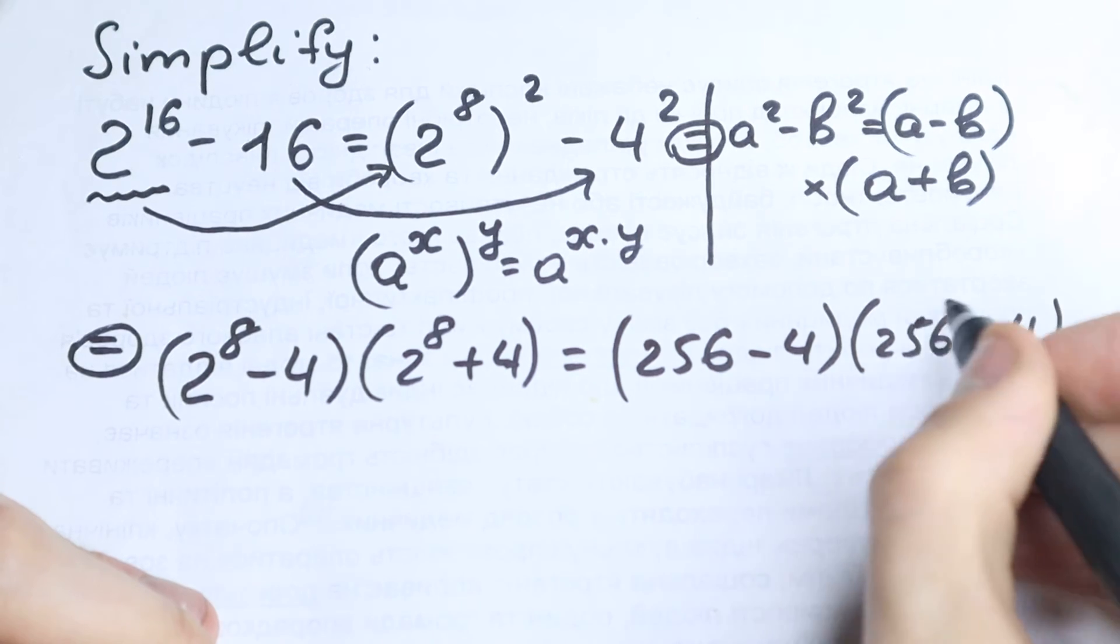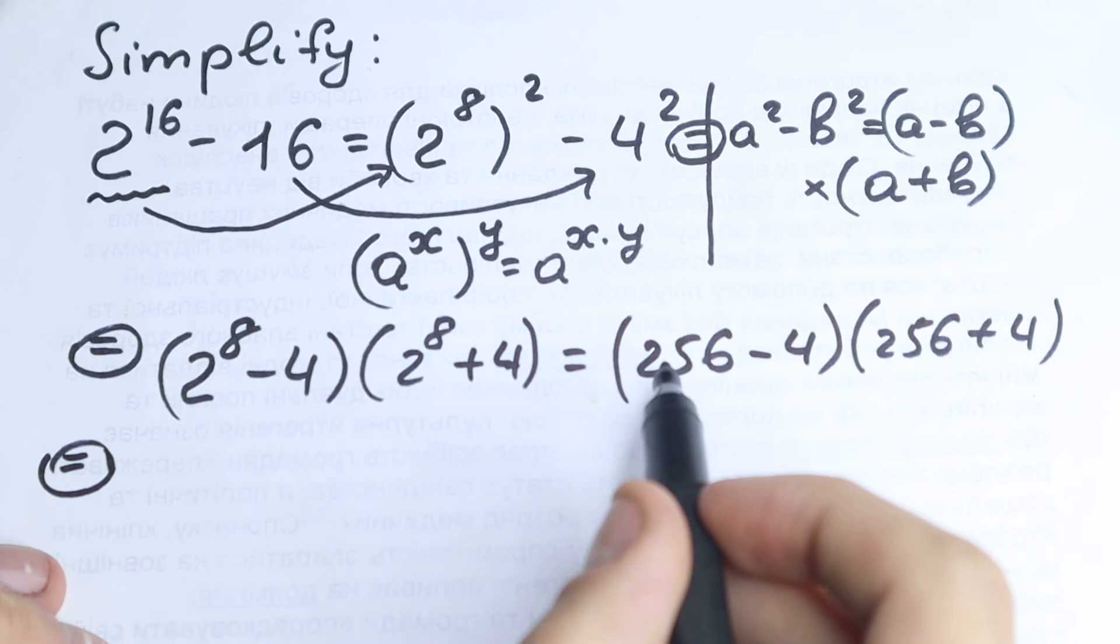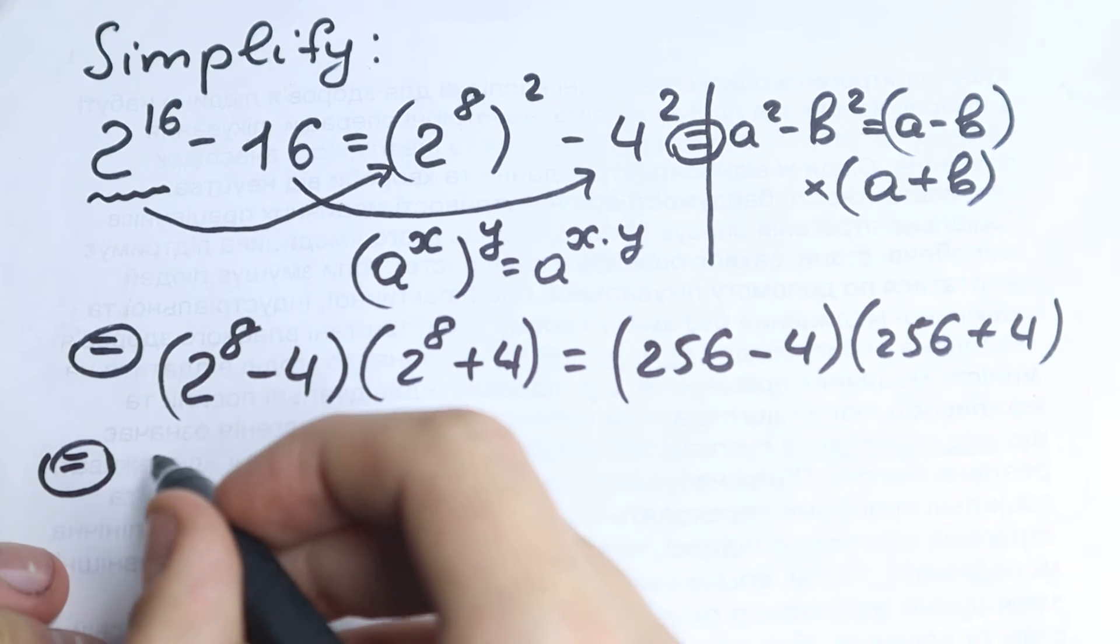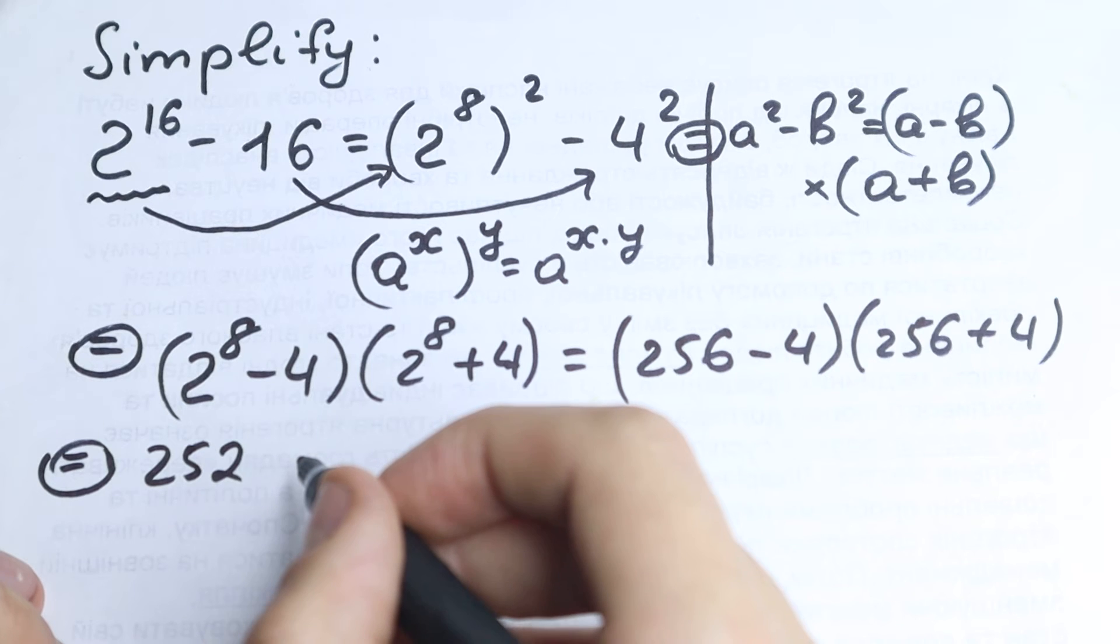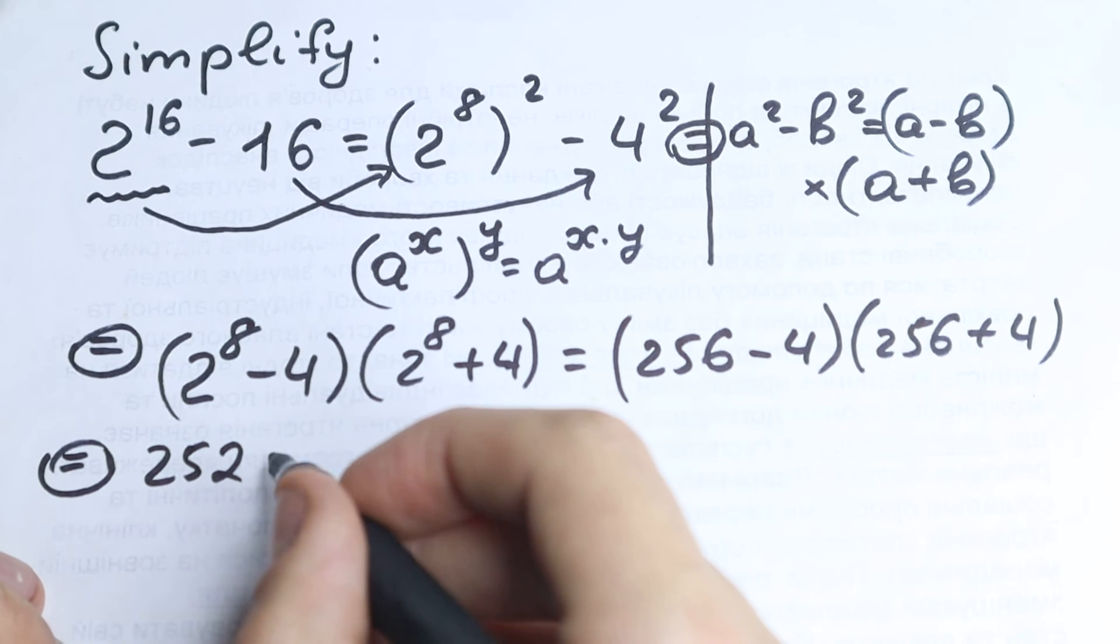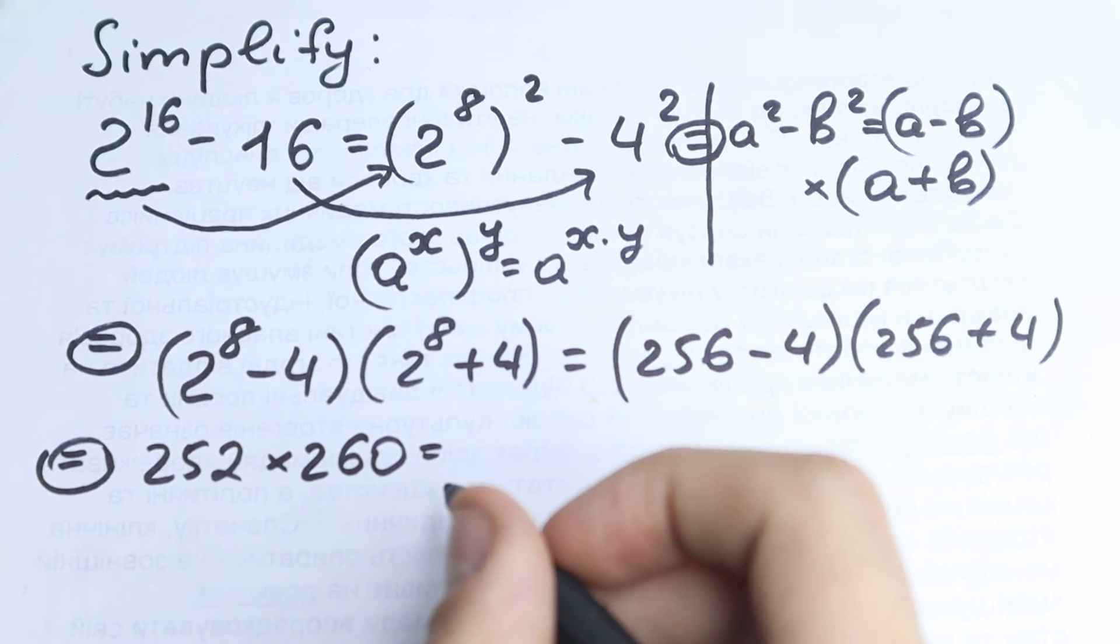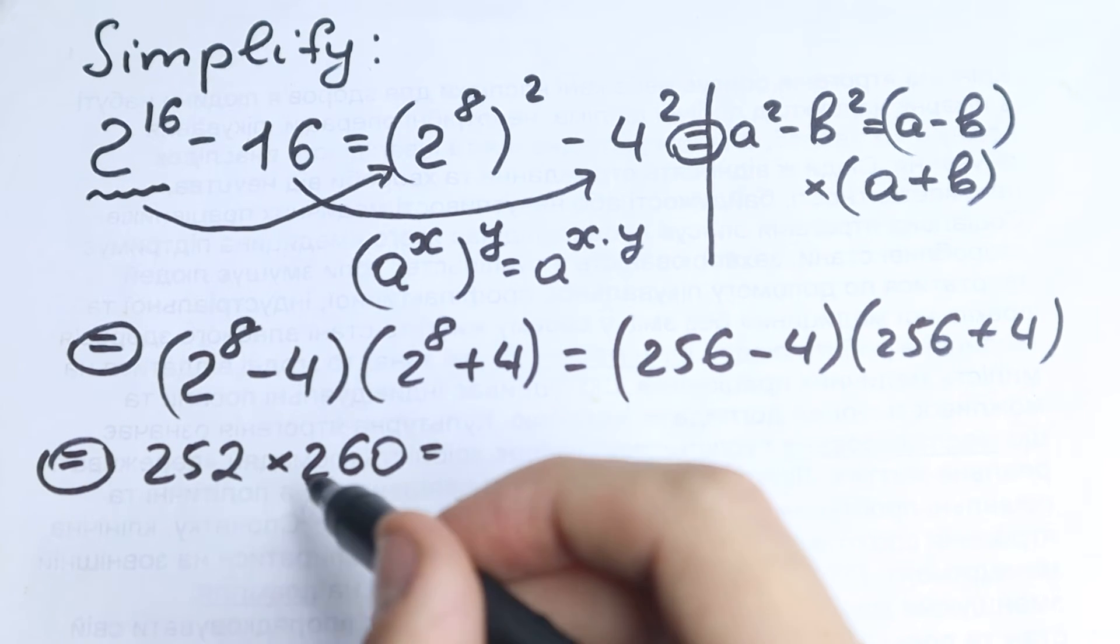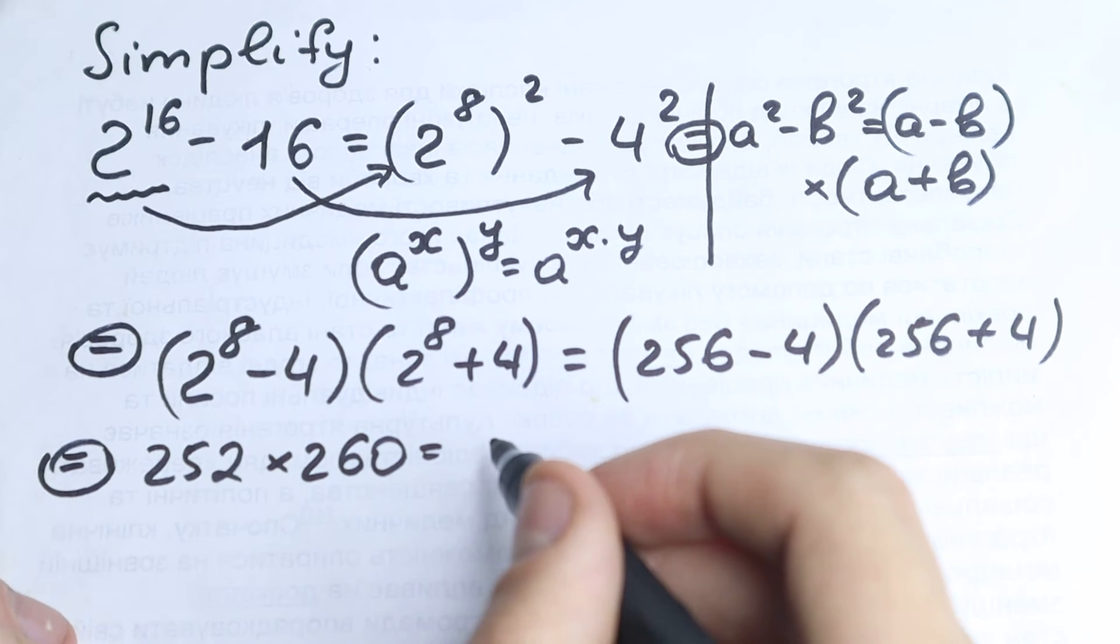So we have 256 minus 4 times 256 plus 4. Brilliant. We don't use our calculator. Let's do this, we don't need it. So right here we have 252 times 260. What we're going to do next? We don't use our calculator. We have like a huge value, but we don't need to use our calculator.